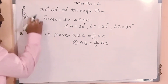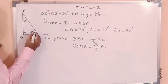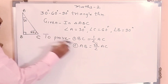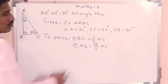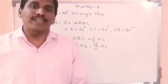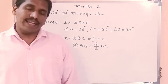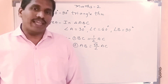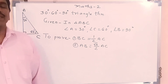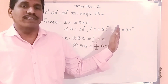Side opposite to 30 is half of the hypotenuse. The angle C is 60 degrees, so the opposite side AB is root 3 upon 2 times the hypotenuse. Whenever we have given measures of angles 30 degrees, 60 degrees, 90 degrees and the length of one side is given, we can find out the remaining two sides using the 30-60-90 degree triangle theorem.